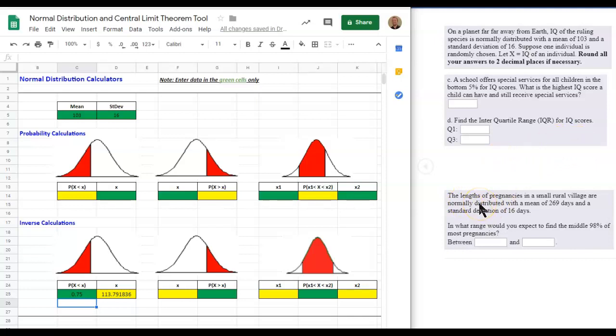For the next problem, we are looking at the length of pregnancies in a small rural village. It's normally distributed with a mean of 269 days and a standard deviation of 16 days. So we're going to change the mean to 269. Standard deviation is still 16.